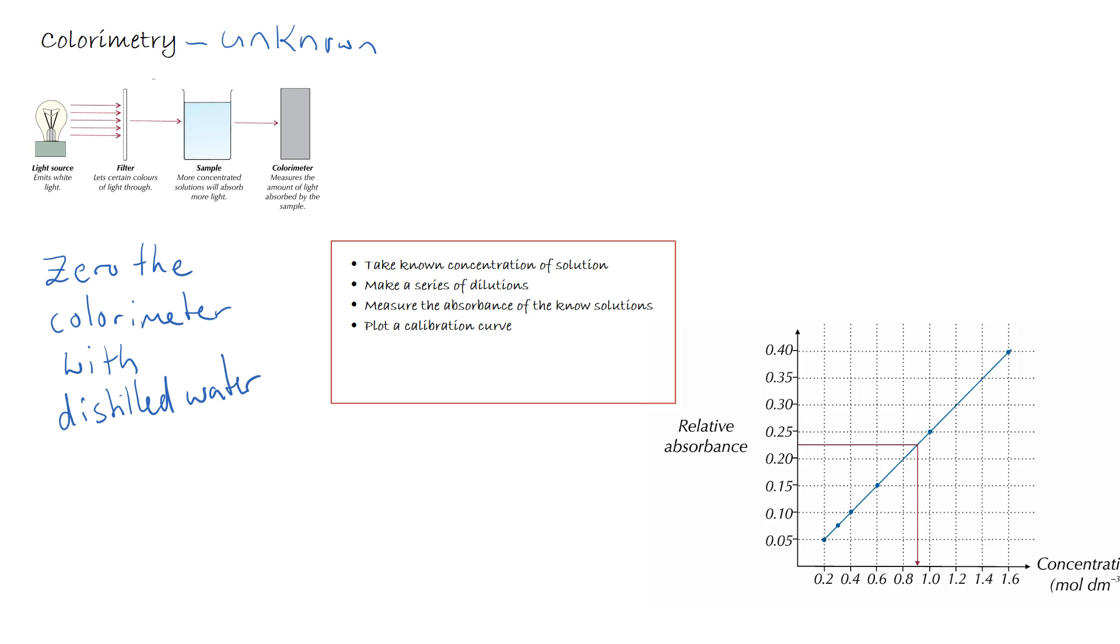Once we've done this we might plot a calibration curve here, like we've got at the bottom right hand corner, where we've got relative absorbance reading against known concentration on the side. So then once we've got our calibration curve, we then measure the absorbance of the unknown sample. That's which we've got here. And then we would simply read off the unknown concentration off the calibration curve. Giving us a way to determine the unknown concentration of a complex ion.